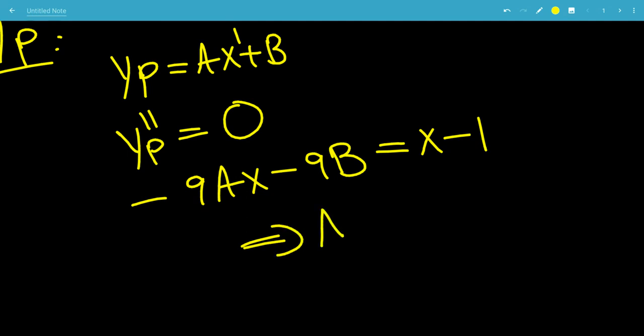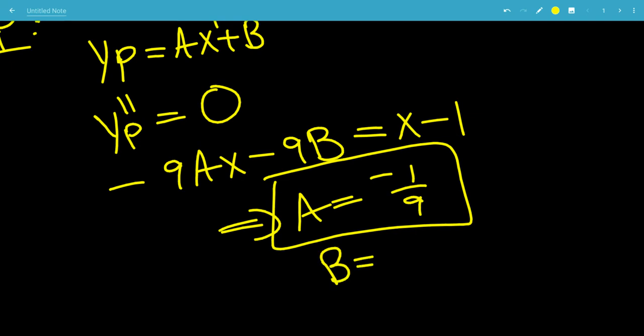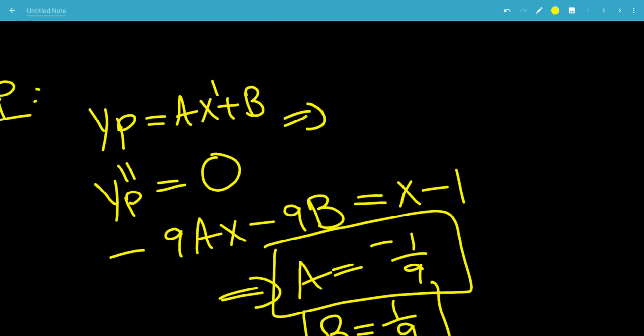So this tells us that a has to be 1 ninth to begin with to get rid of the 9, and then we have to have another negative sign to make it positive. So a is negative 1 ninth, and b, to get rid of the 9, has to be 1 ninth, and the sign is good. So that means that the particular solution, yp,